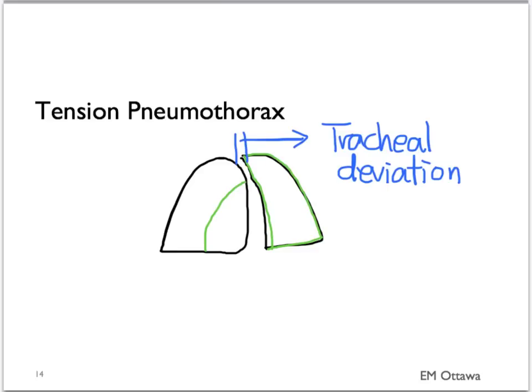Since there is also decreased venous return, you would expect the patient's jugular venous pressure to be high. The patient's blood pressure will also be low. You may also appreciate further decreased breath sounds on the affected side.